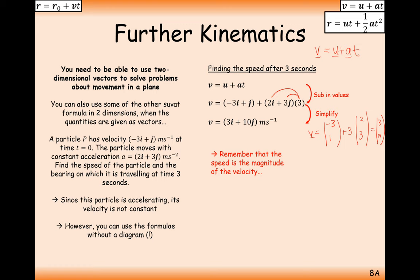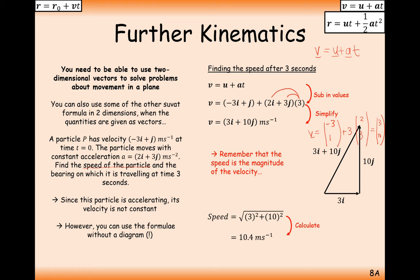Now we need the speed — that's the magnitude of the velocity vector. Speed = √(3² + 10²) = √109 ≈ 10.4 m/s. When you see 'speed', think: I have a velocity vector and need to apply Pythagoras to get the total speed. The speed is the length of the right-angled triangle formed by the velocity vector components.